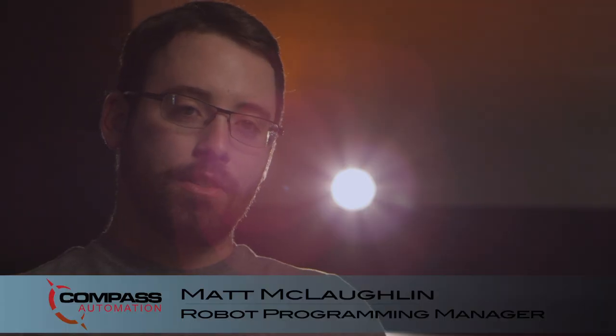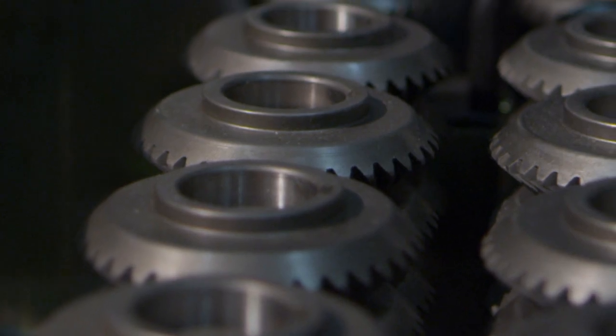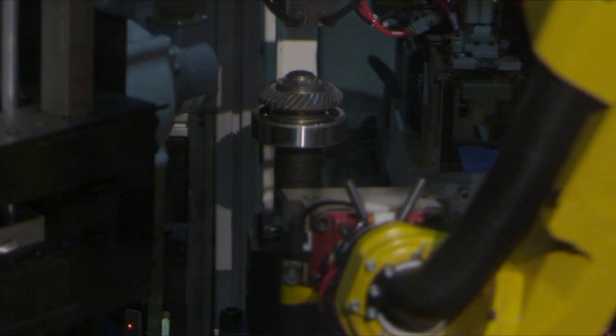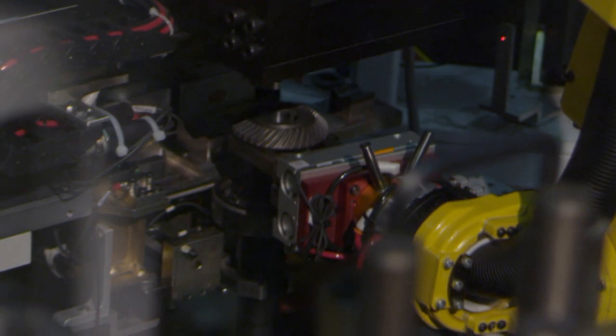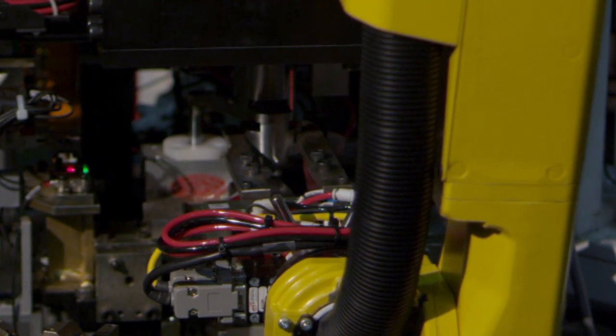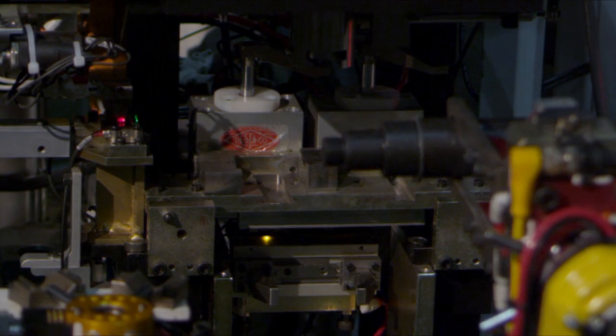When we pick the shafts, we then pick gears from a gear table. One of the more complex parts of this machine was locating the keyway. We rotate the gear into the shaft, and once we find the keyway, it just nests down.